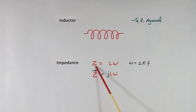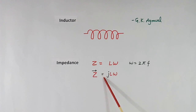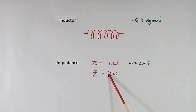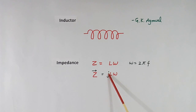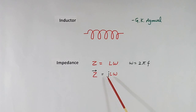Here I have written the impedance in vector form, equal to j L omega. The numerical value of this vector is L omega, same as before. Only j has been added, which is a vector. J is a unit vector, and whenever you multiply anything by j, that will shift by 90 degrees.